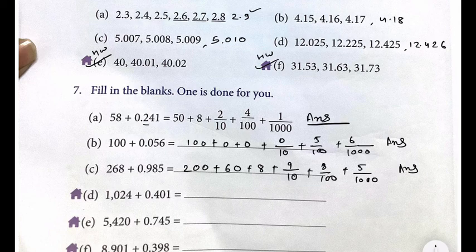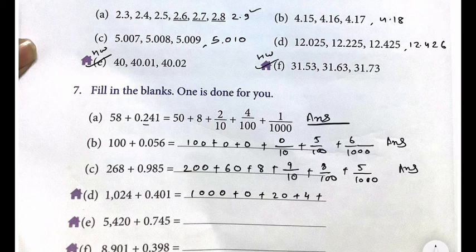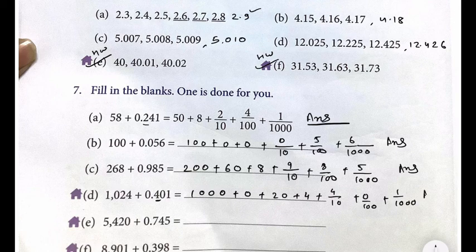Let me solve one more question. 1 is in thousandths place, 0 is in hundredths place, 0 is in hundredths place, 2 is in tenths place, 4 is in ones place, and again 4 is in tenths place, 0 is in hundredths place, and 1 is in thousandths place. The remaining questions are your homework. Take care, do your homework, complete your copy — bye students!